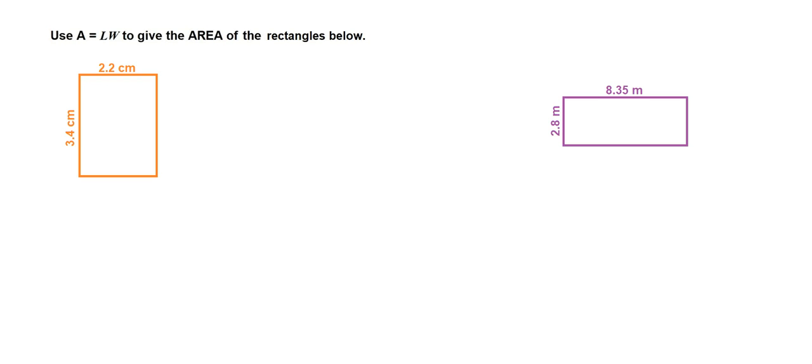You can see in both of these rectangles that they have decimal numbers. So let's use the formula. So let's write that down. A equals length times width.